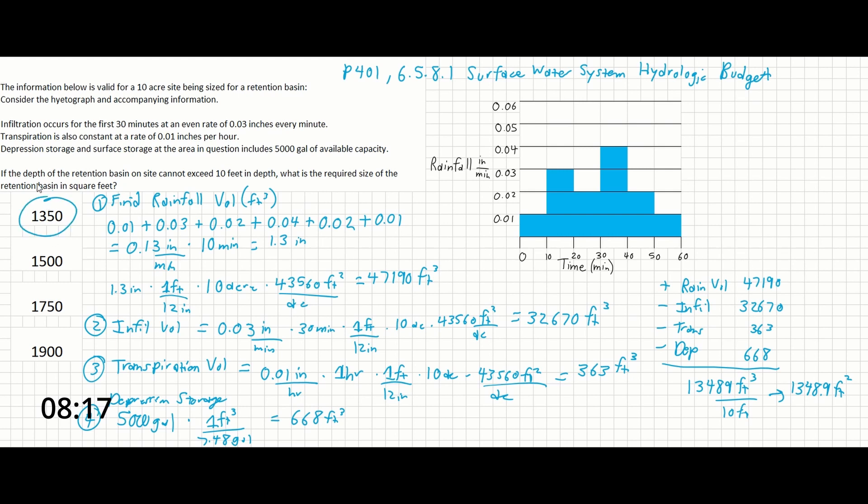So that's all it takes to solve this problem. This is pretty much just a long grinding series of minor unit conversions where you have to understand how to use the hietograph given to you. And you have to understand a little bit about the surface water hydrologic budget just to recognize that the rainfall is the number that you're sizing for after you subtract out the other hydrologic factors that are occurring. And that's it.